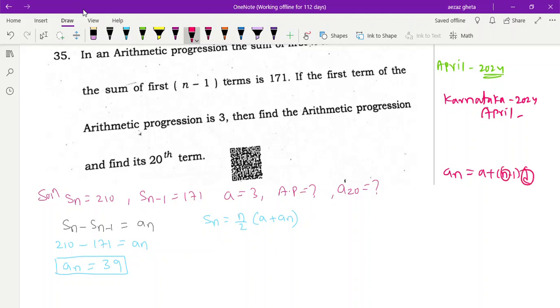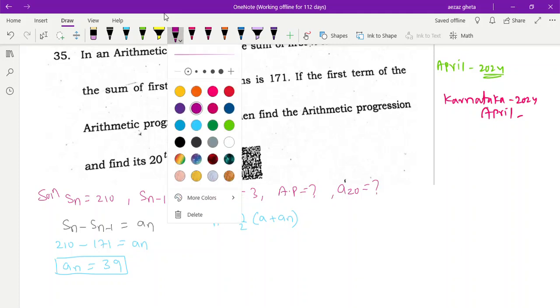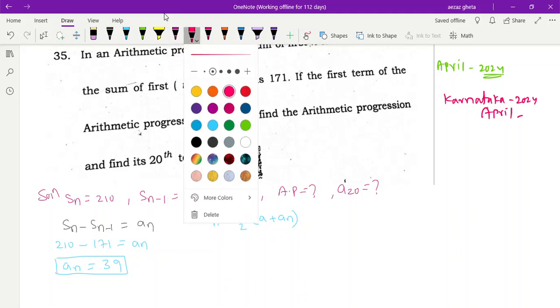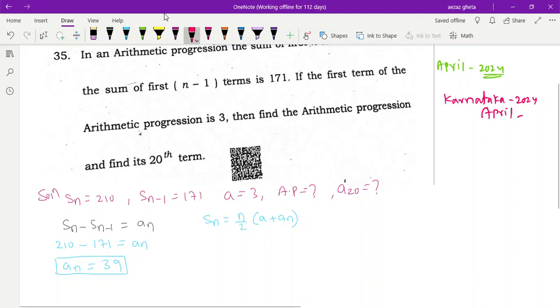Two things I can't find, correct. So first I will find out n, then we will find out n, then we will see what to do. Okay let's see now. So Sn value we know, 210, n by 2, a value is 3, An value just we got 39.